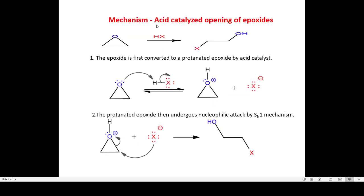Coming to the mechanism of the acid-catalyzed opening of the epoxide: there is a ring opening followed by SN1 leading to the addition product. In the first step, the epoxide is converted to a protonated epoxide by the acid catalyst. The protonated epoxide then undergoes a nucleophilic attack via the SN1 mechanism, giving the acid-catalyzed opening of the epoxide. This involves protonation followed by nucleophilic attack following the SN1 mechanism.